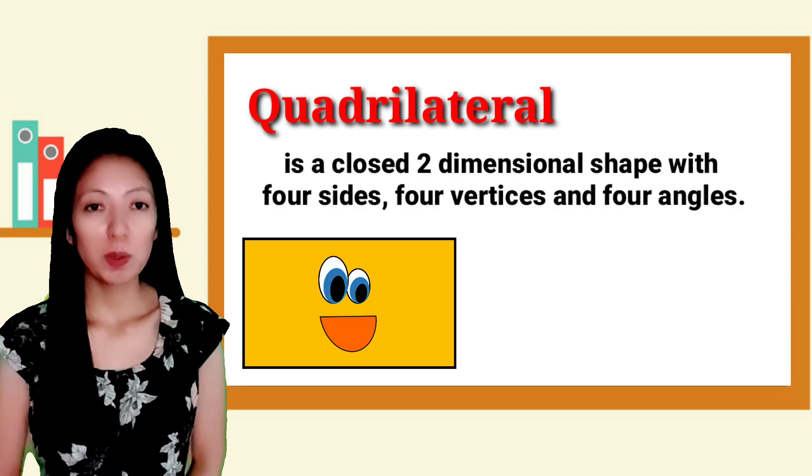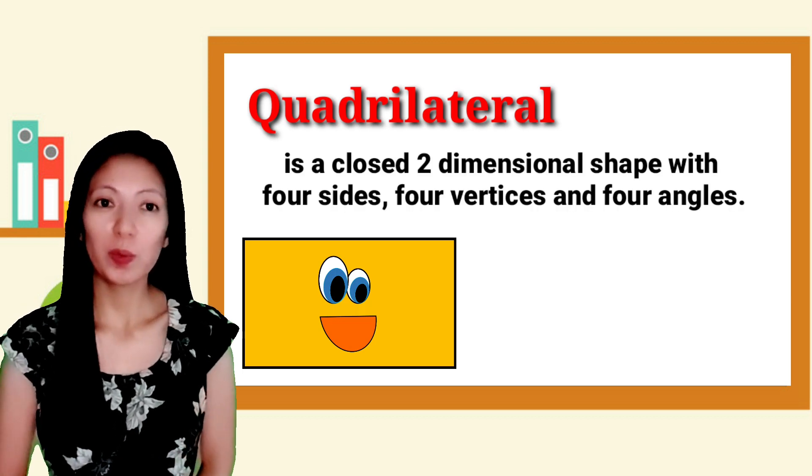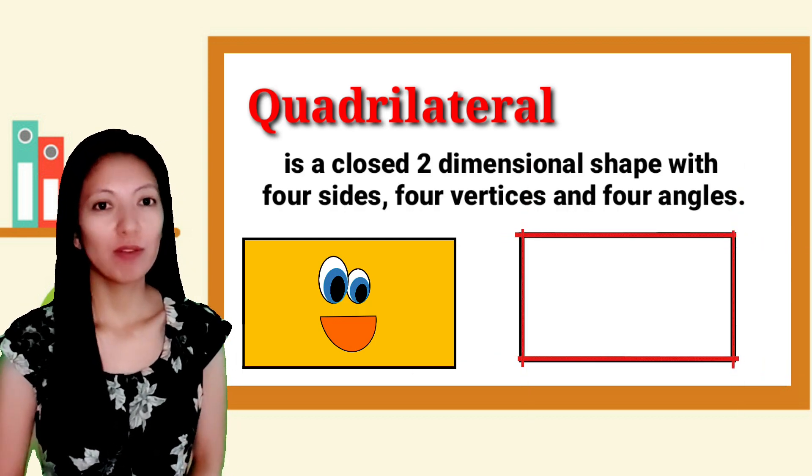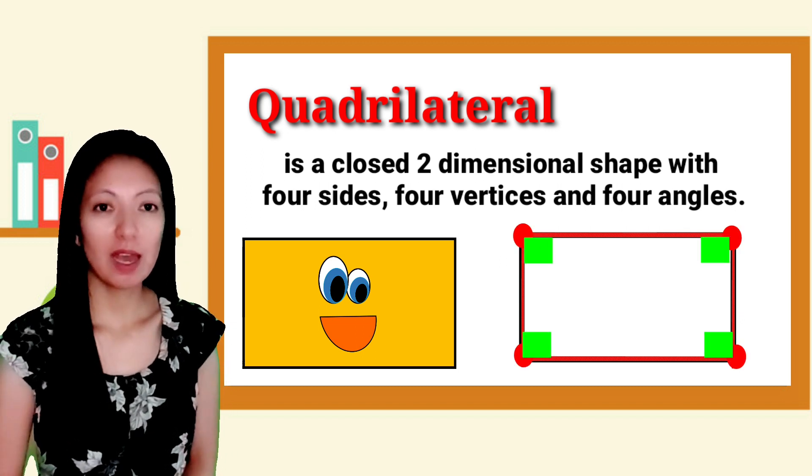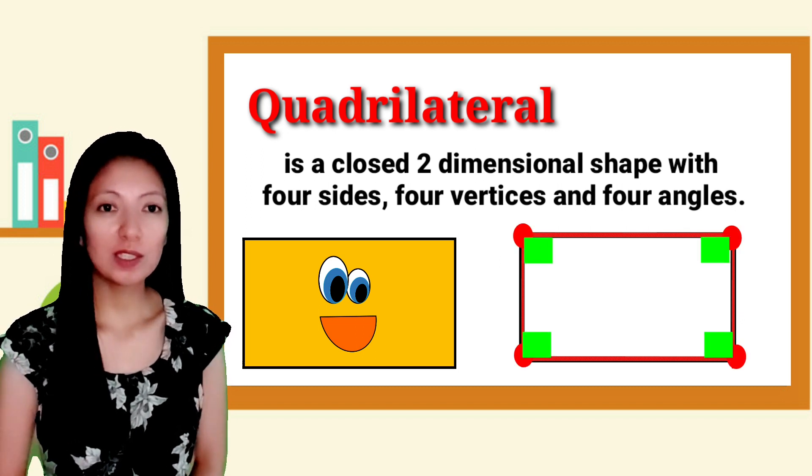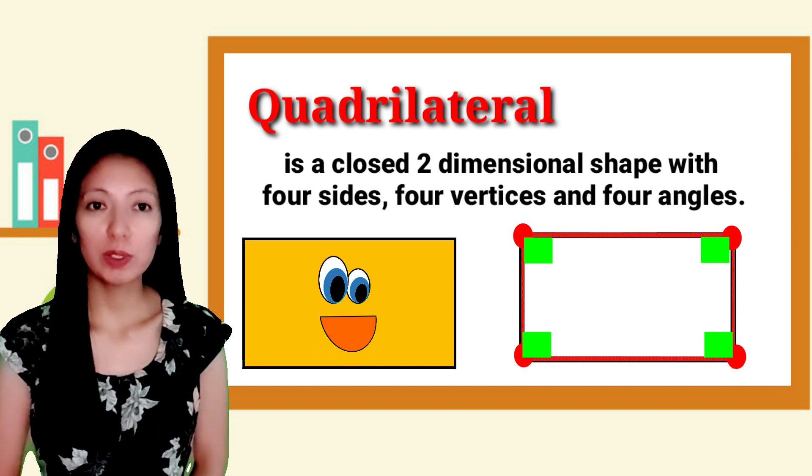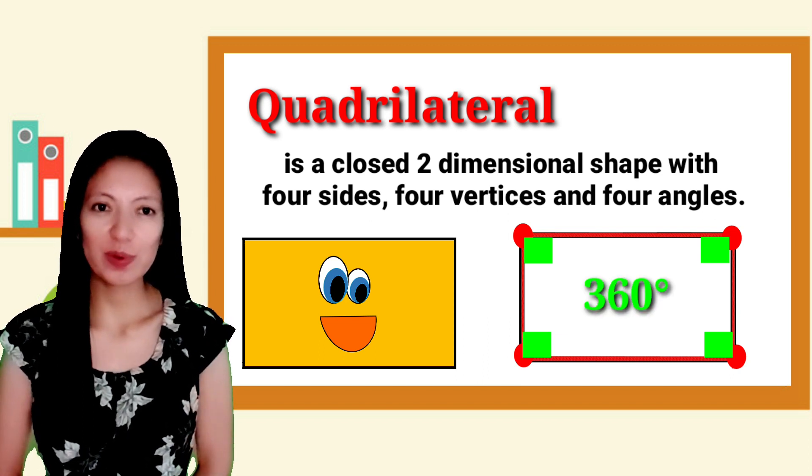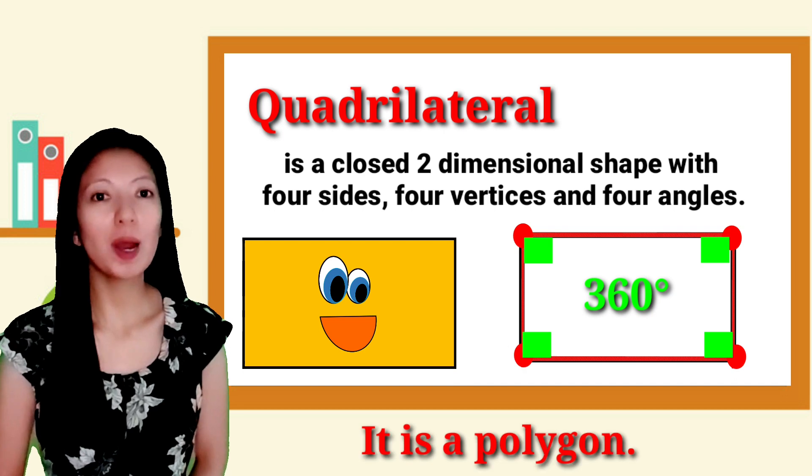Quadrilateral is a closed two-dimensional shape with four sides, four vertices, and four angles. The sum of all the angles in a quadrilateral is equal to 360 degrees. It is also a polygon.